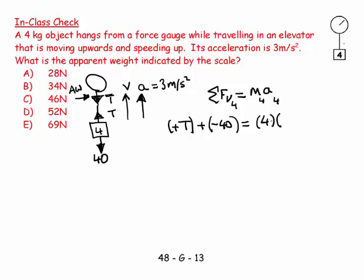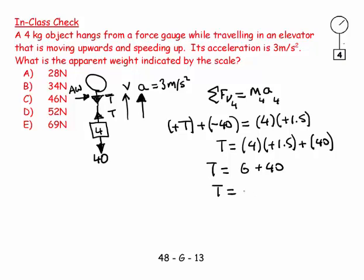And so this acceleration, if I look, is pointing upwards because it says it's speeding up while travelling upwards. So this is a plus 1.5. That plus is important and you get it from the diagram. So my T is equal to 4 times plus 1.5, bring your 40 across, plus 40. So that means that my T is equal to 6 plus 40, T is equal to 46 newtons.